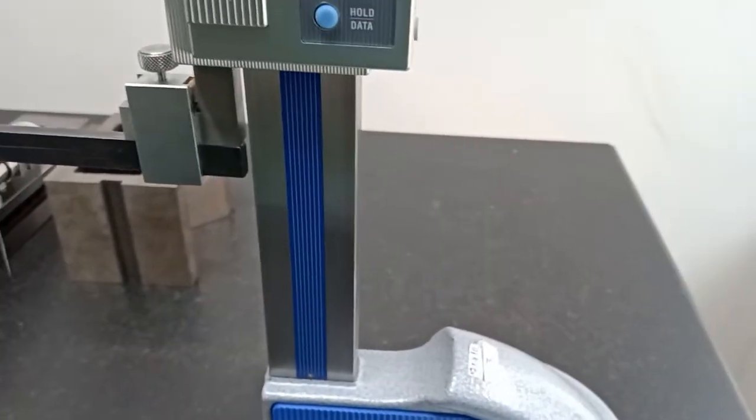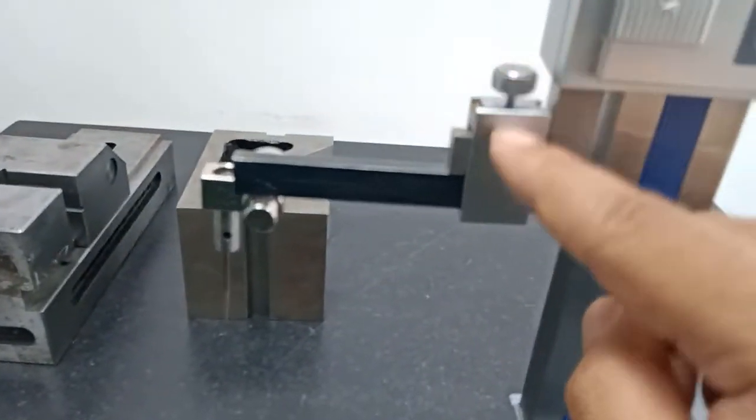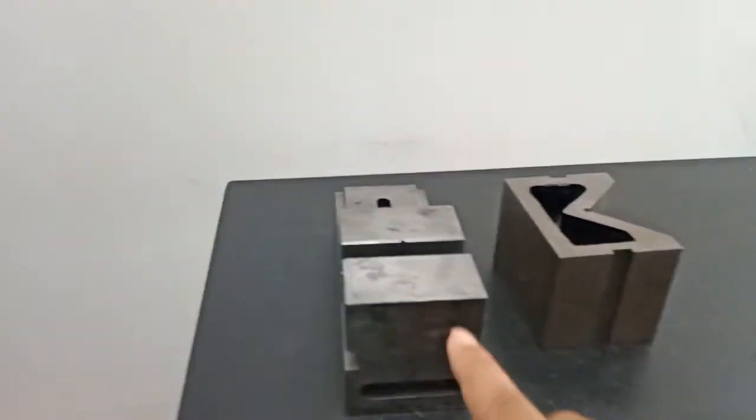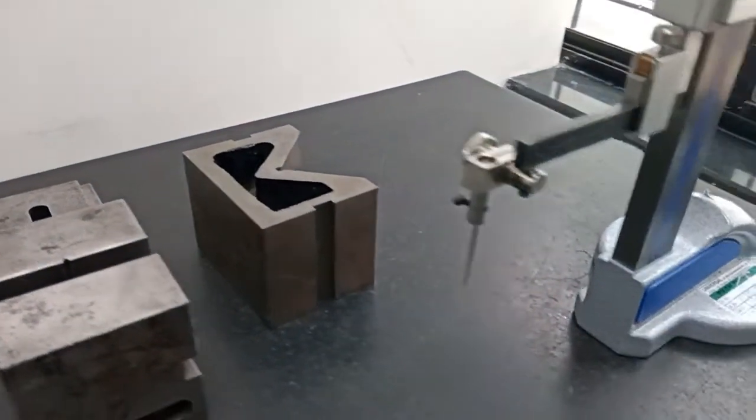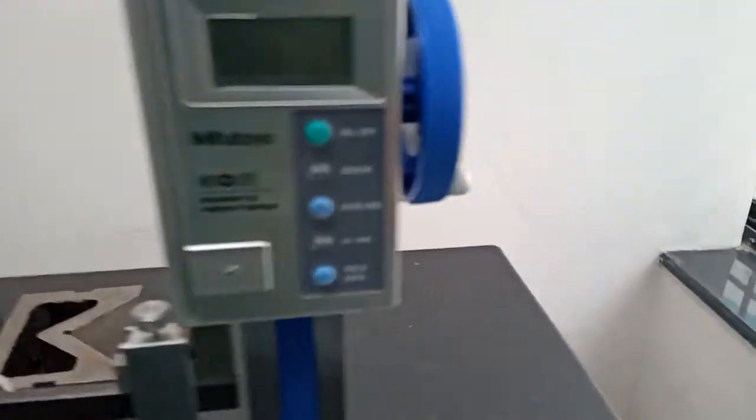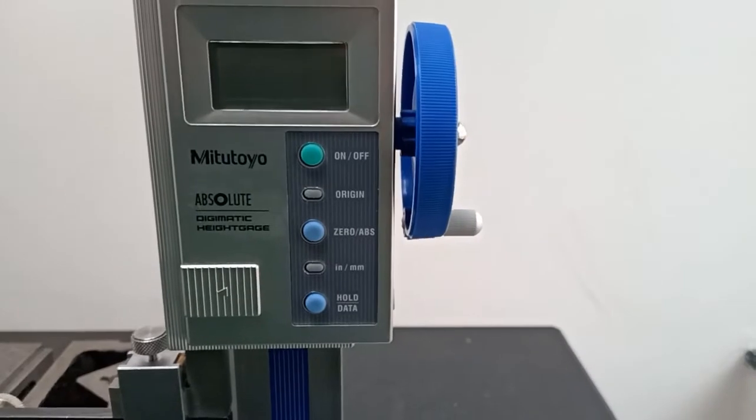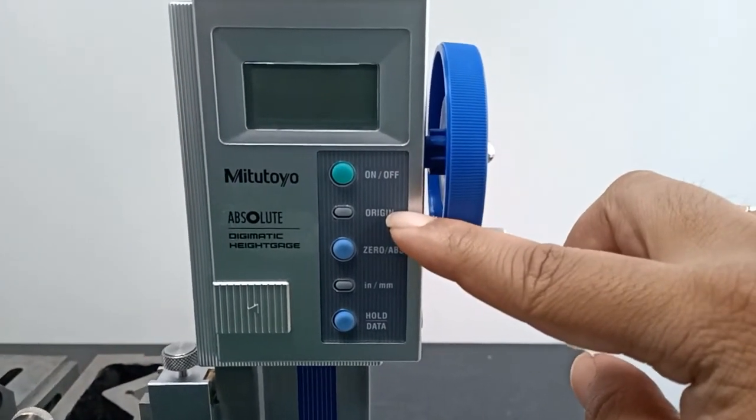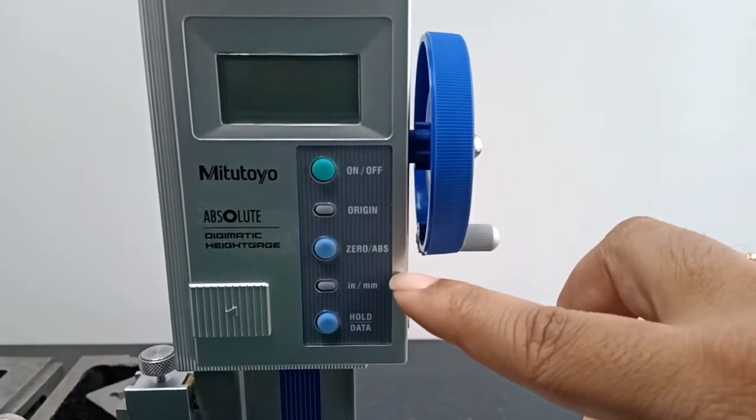This is scriber, we can change the scriber also. This is vice, this is V block. Now we can see the digital setting display. This is on button, this is origin, this is zero or absolute system, this is unit change setting, inch or in mm.